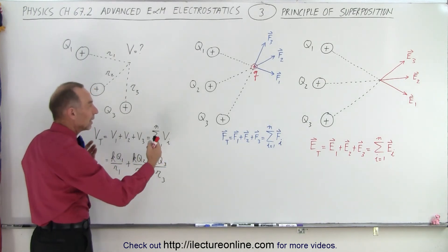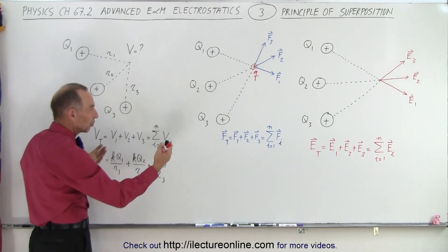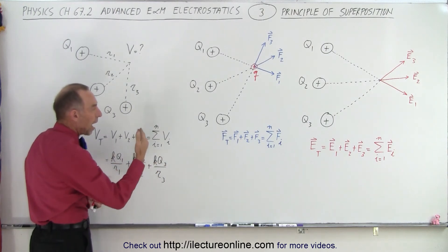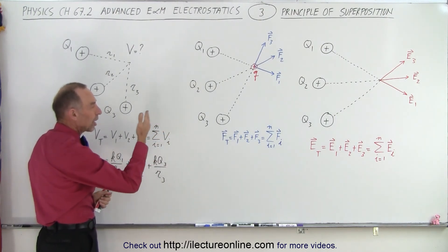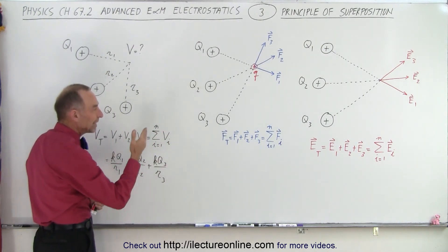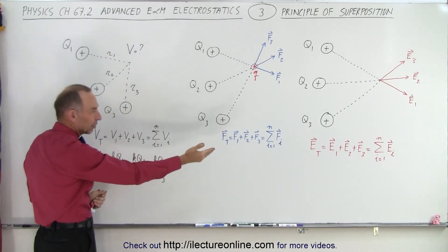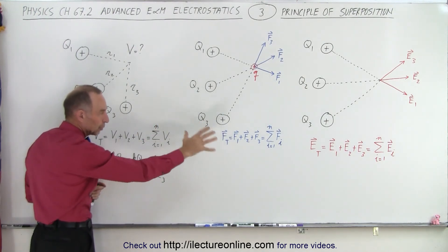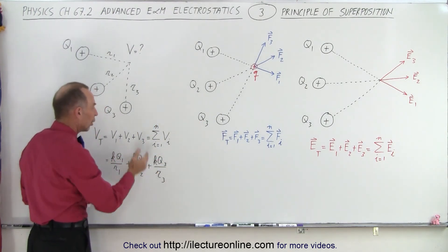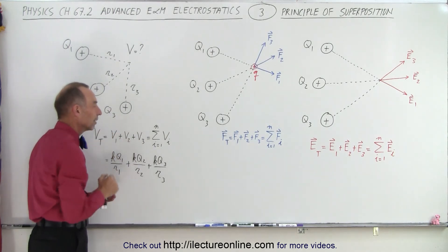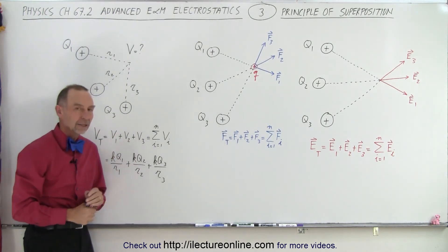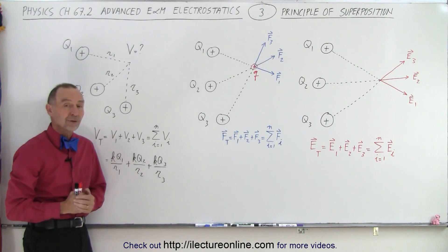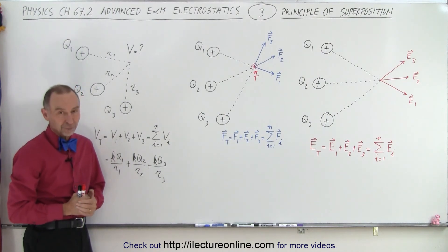This is what we mean by the principle of superposition: we simply add the contribution of each individual charge. In the case of the electric field and Coulomb forces, we do that vectorially. In the case of the potential, we do that using scalar addition. That is what we mean by the principle of superposition. Thank you.